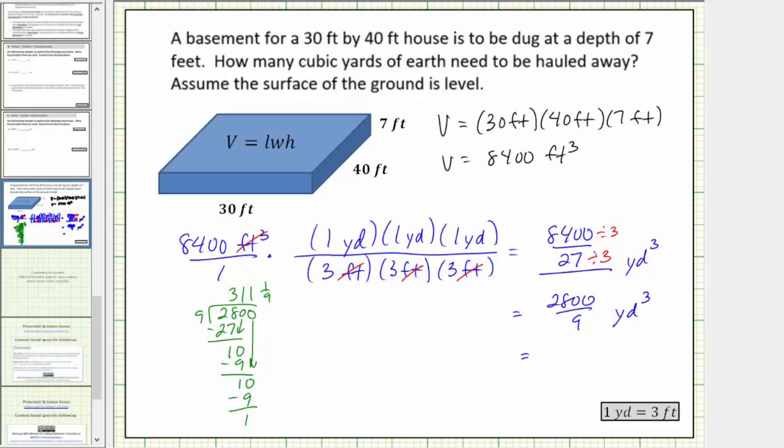Which means 8,400 cubic feet is equal to 311 and one-ninth cubic yards. I hope you found this helpful.